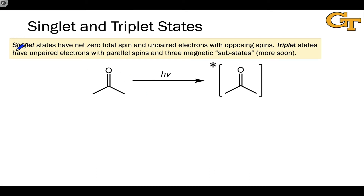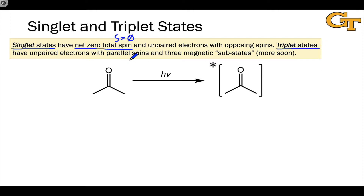We have previously defined singlet and triplet states, so let's remind ourselves of those definitions. Singlet states have net zero total spin — we represent that with the capital letter S — so for a singlet state, S is equal to zero, with unpaired electrons having opposing or anti-parallel spins. Triplet states have unpaired electrons with parallel spins and a total spin of one; S equals one for a triplet state.